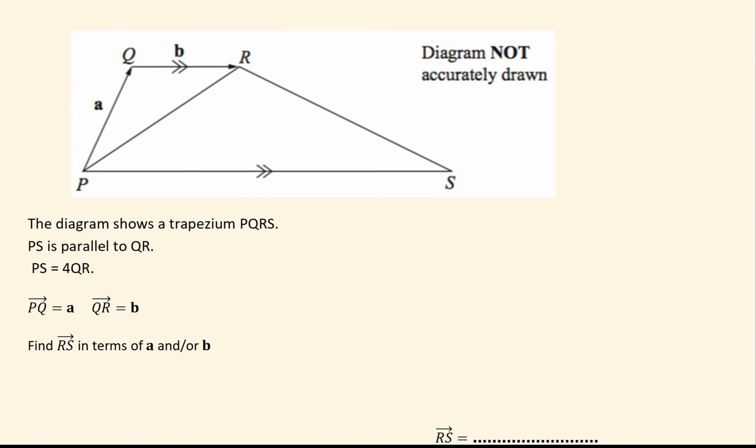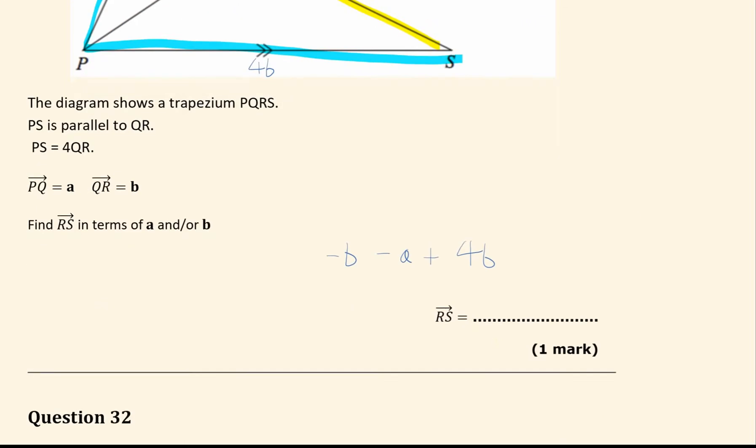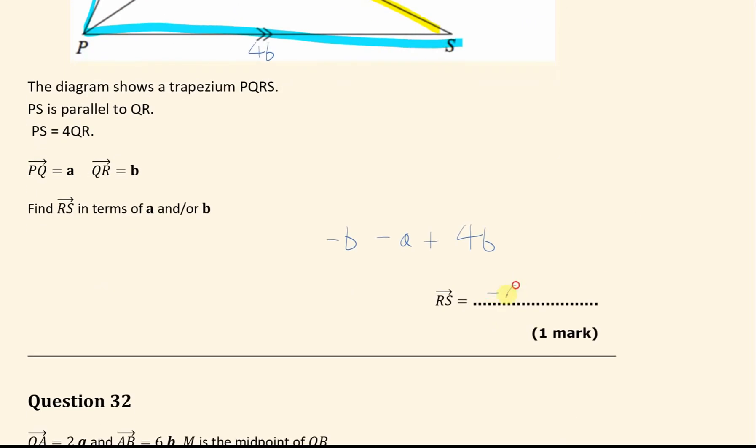I think it is the last part of this question, we want the vector R to S. Again, we can't go directly there, but we have just worked out that this length is 4b. So we can just go the long way around, and we can take this path, that will also take us from R to S. So first we went from R to Q, which is minus b, then from Q to P is minus a, and then plus 4b to take us from P to S. Simplified down, that is going to be minus a plus 3b.